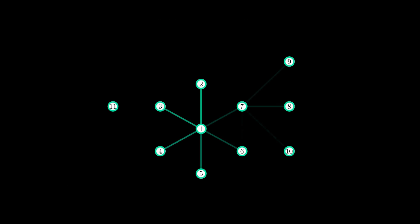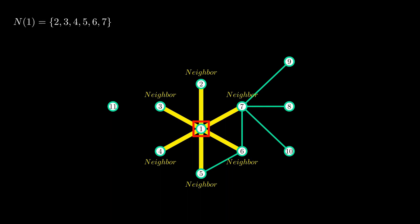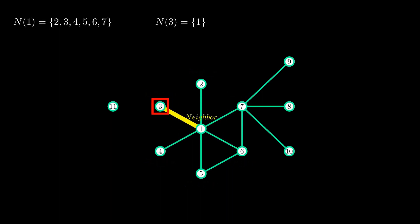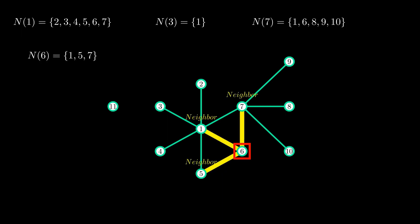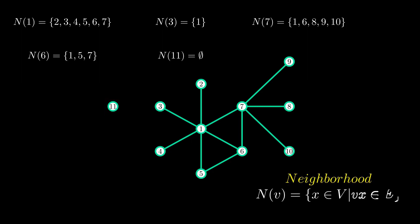For a vertex, the vertices adjacent to it are its neighbors. Here is an illustration of neighbors for some vertices. We can introduce ourselves to another definition, that is the neighborhood. The neighborhood of a vertex V is the set of vertices adjacent to V, or the set of neighbors of V.